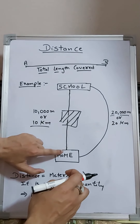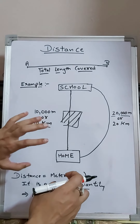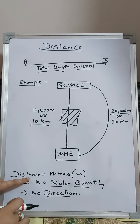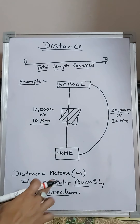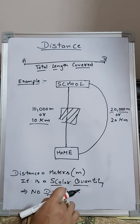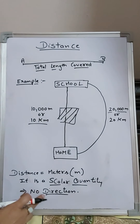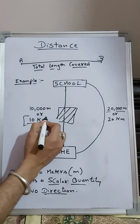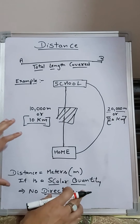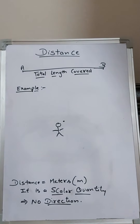The total path covered in the previous case was 10 kilometers, but due to construction you now have to cover 20 kilometers. This total length covered between two points is what we call distance. Distance is always measured in meters; the unit is meters, represented by small 'm'. Distance is a scalar quantity.